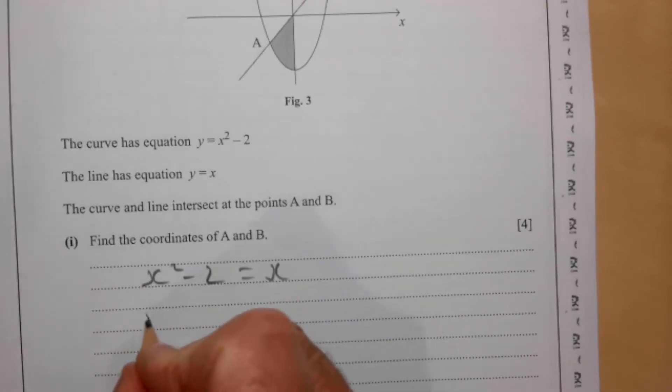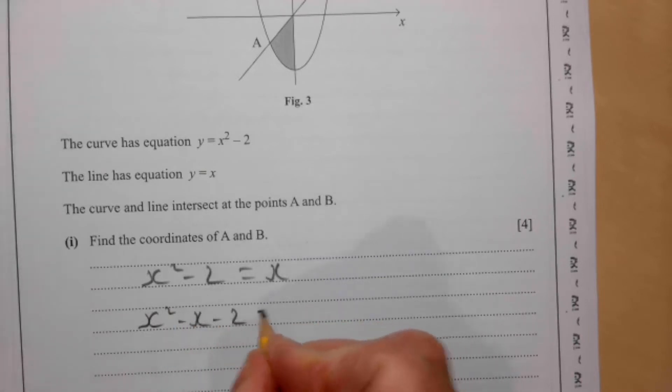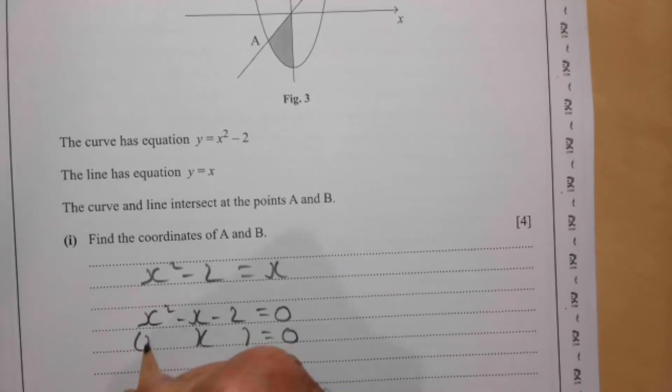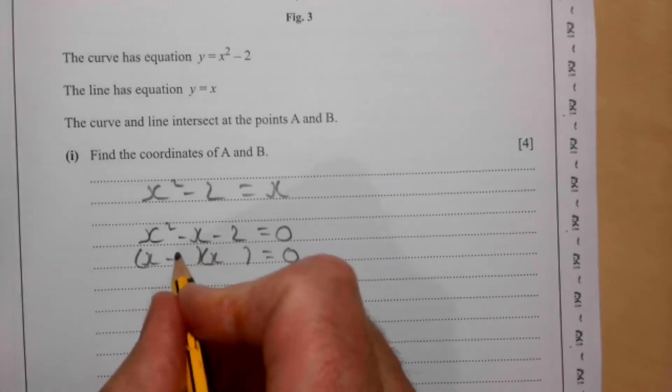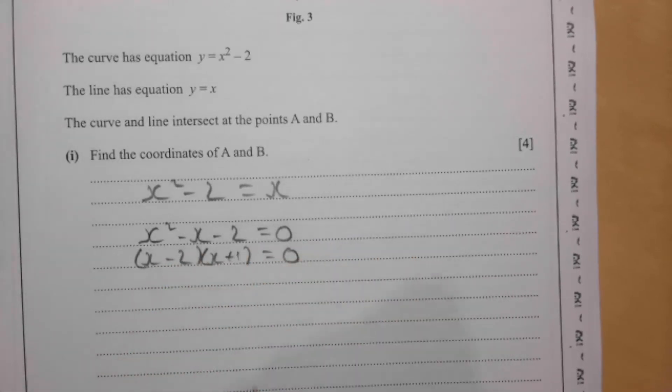So rearranging this we'd have x squared minus x minus 2 equals 0, and we would factorize this to solve it for x. So two numbers that multiply to give us minus 2 and add to give us minus 1 are going to be minus 2 and 1.